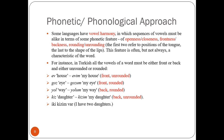Vowel harmony is found in some languages, like Turkish. It means that if we have a word in Turkish, any two vowels in that word must be alike. If there is a front vowel, the second must also be a front vowel. Or if both are not front vowels — say one is front and another is back — then there must be another harmony: if one is rounded, the second must also be rounded.